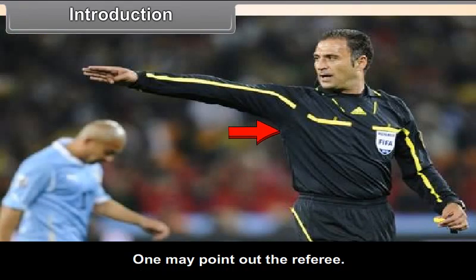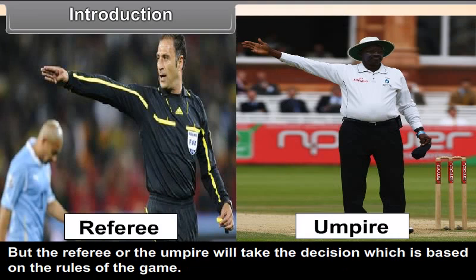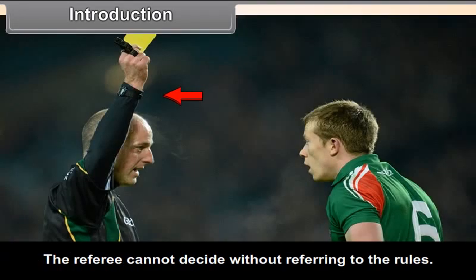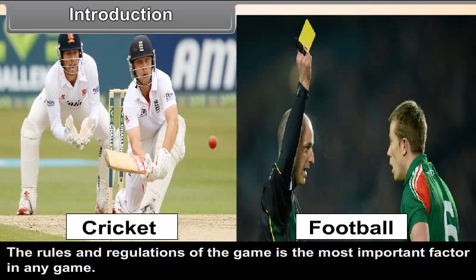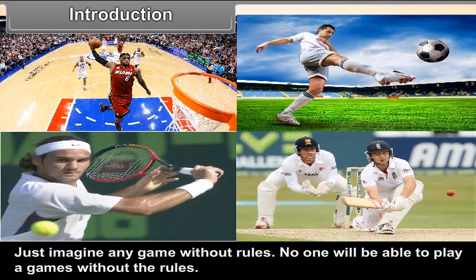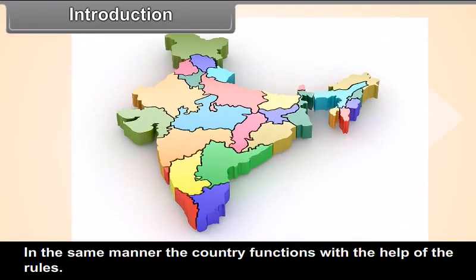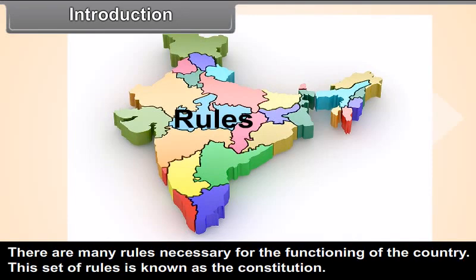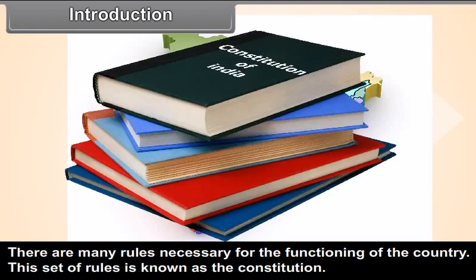Is it the player, the referee, or the spectators? Who has the final authority to take the decision? One may point out the referee. But the referee will take the decision based on the rules of the game. The referee cannot decide without referring to the rules. The rules and regulations of the game are the most important factor. Just imagine any game without rules — no one will be able to play. In the same manner, the country functions with the help of rules. This set of rules is known as the Constitution.